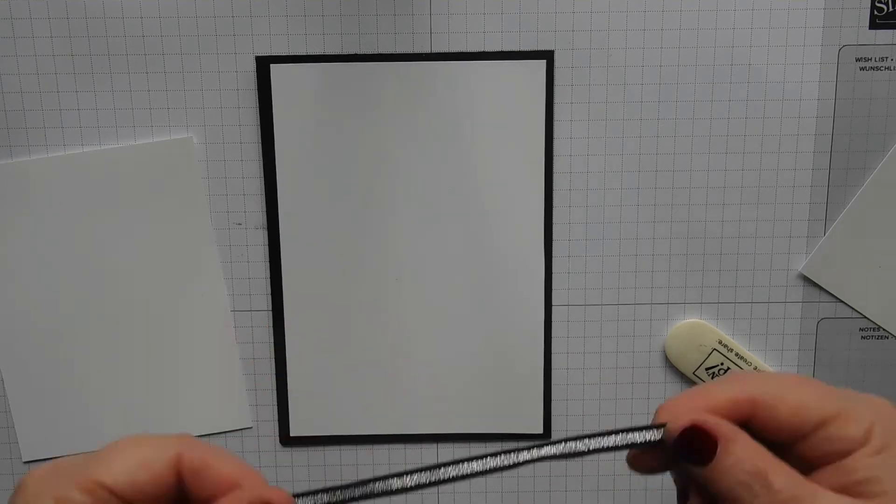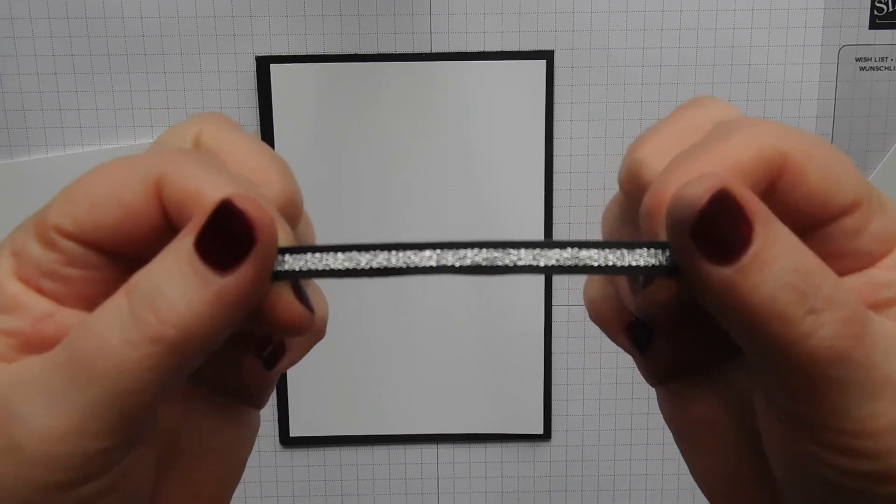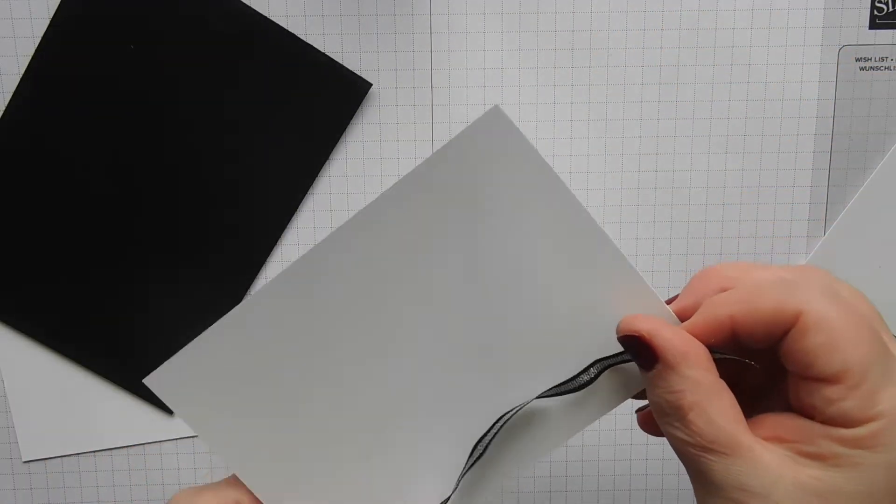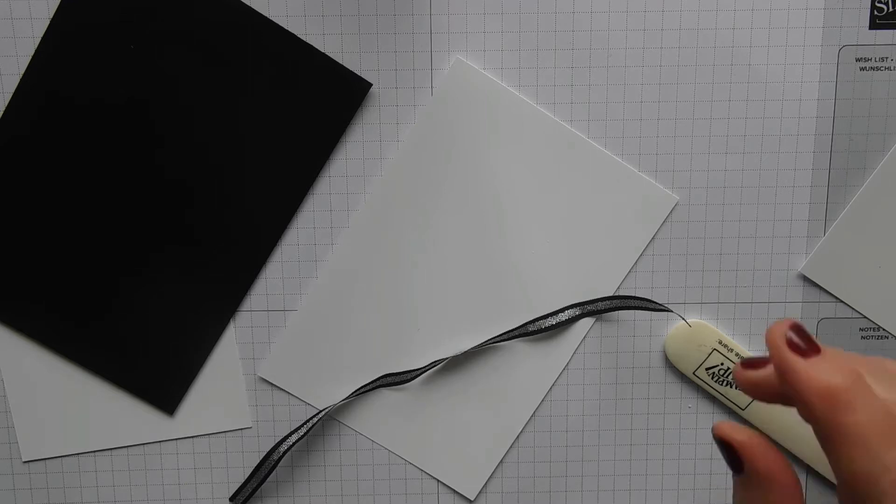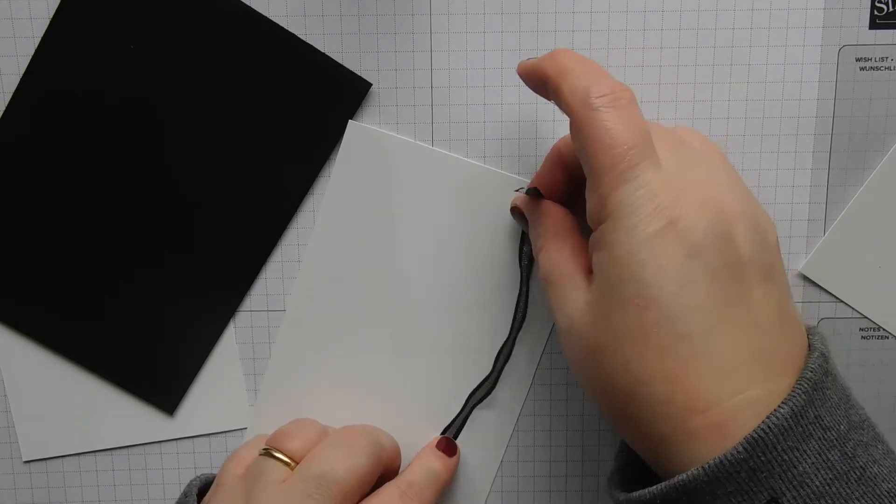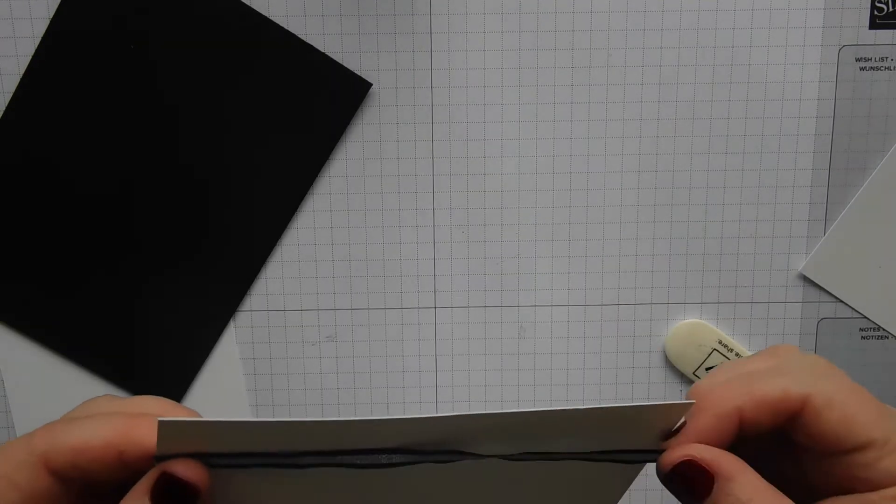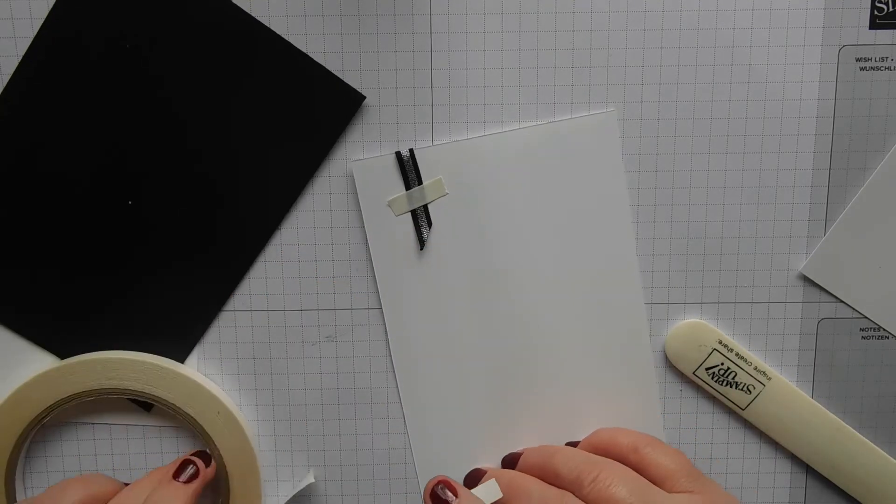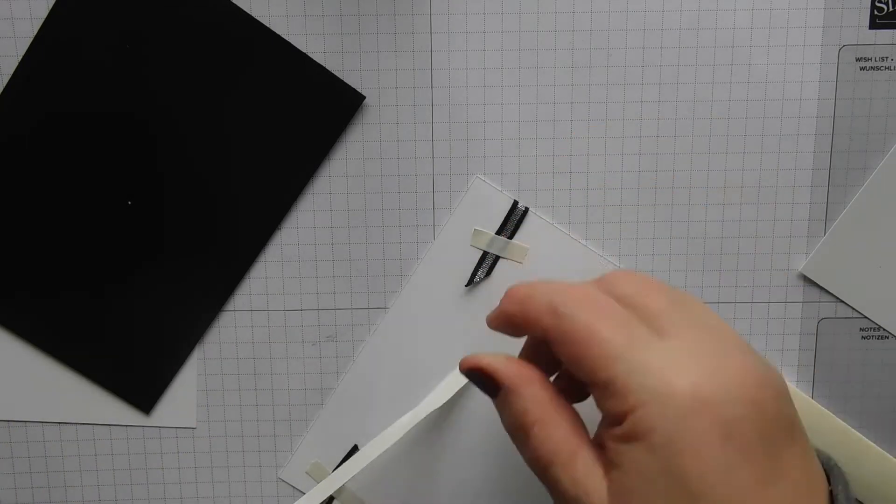But first, I'm just going to put this lovely ribbon. It's black and silver metallic ribbon. That's in the new spring summer catalogue. And it's lovely. Really handy for my black and white cards. So all I'm going to do is stick it down on one side, pop it down, and then just stick it down on the back. There we go.